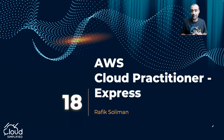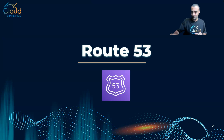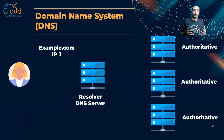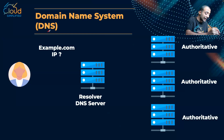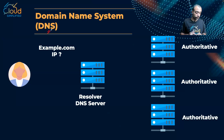That's the last lesson in the AWS networking section. Here we are going to introduce the interesting service of Route 53. Route 53 is a fully managed DNS service from AWS. Let's take a step back and understand what exactly is the use of a DNS server.